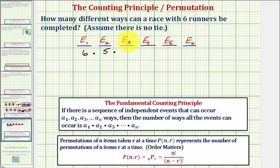For the third place finisher, there are only four possibilities since two runners have already placed. Times four. You can see the pattern: three possible winners of fourth place, two of fifth place, and only one possible winner of sixth place, given the other runners have already placed.